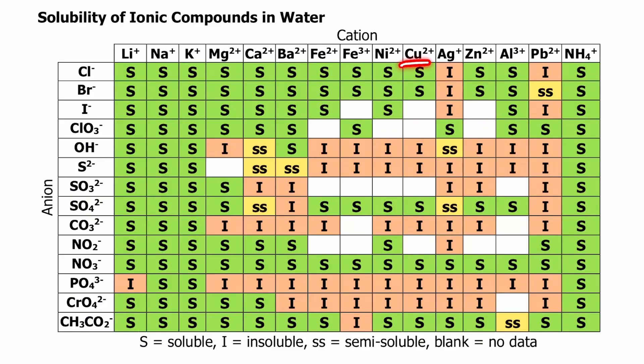According to the solubility table, copper phosphate is insoluble. Copper sulfate should work. Magnesium hydroxide is also not soluble, so we'll use sodium hydroxide.